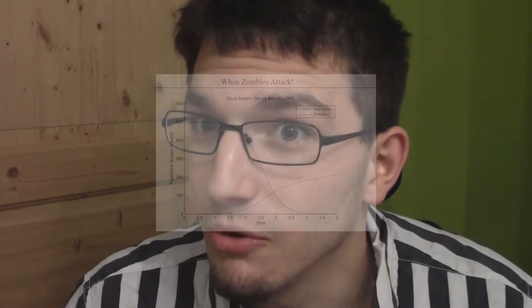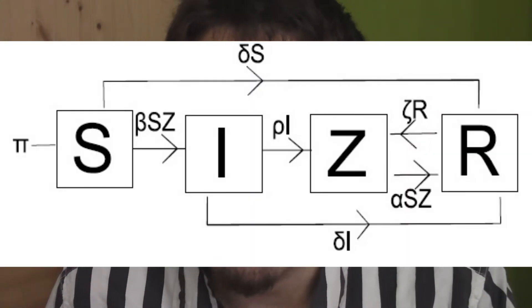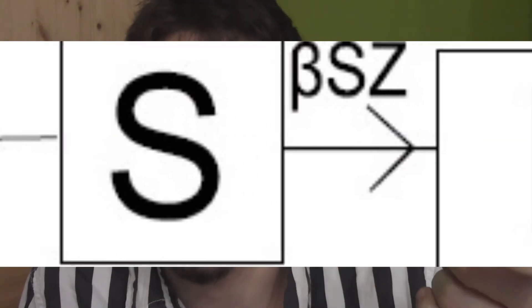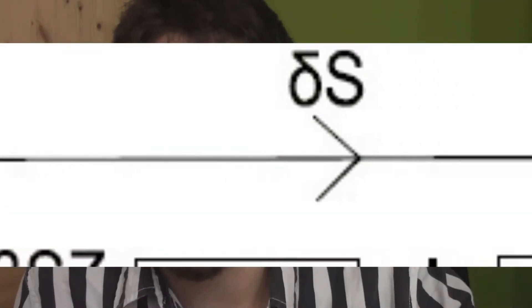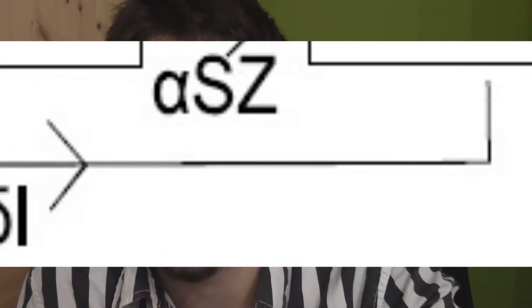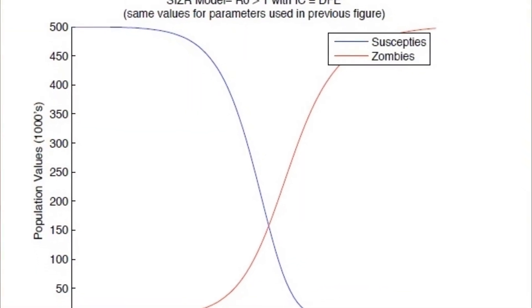Es gibt drei weitere Modellvarianten. Zunächst gestalten wir das Basismodell realistischer: Ein gebissenes Opfer verwandelt sich nicht direkt zum Zombie, sondern hat eine Verzögerung und wechselt in eine infizierte Gruppe I. Von dort kann man eines natürlichen Todes sterben. Das Ergebnis bleibt ähnlich — die Zombies nehmen die Überhand — aber der Schnittpunkt verschiebt sich: Im Basismodell bei circa drei, in diesem Modell zwischen vier und fünf.